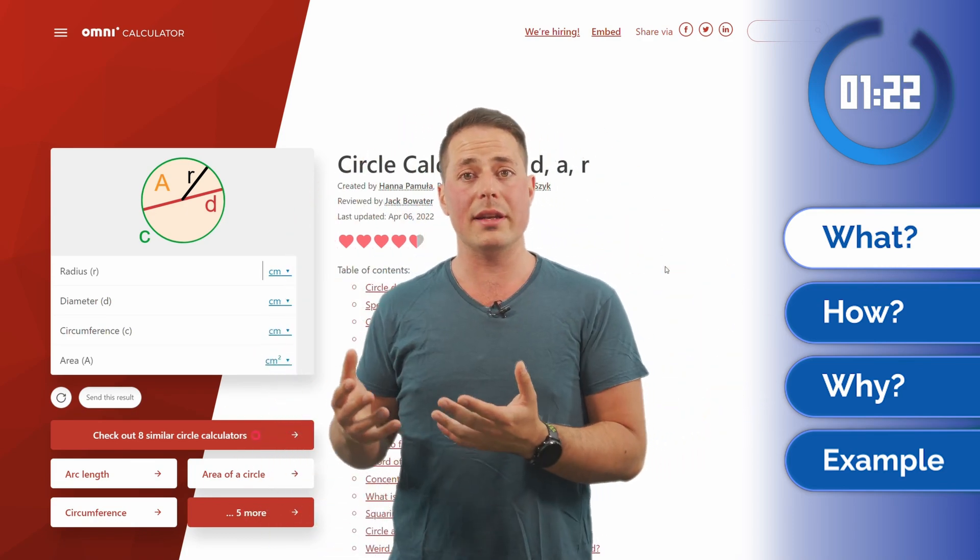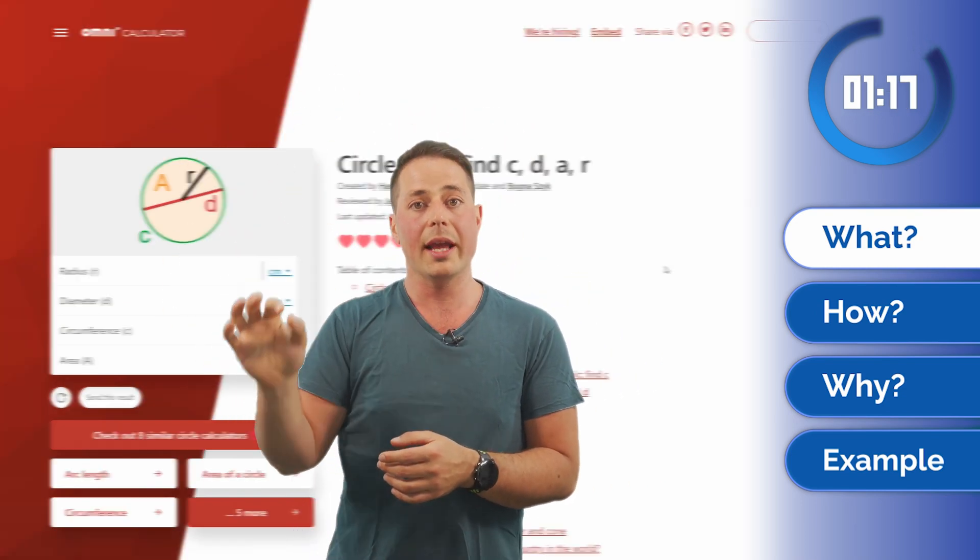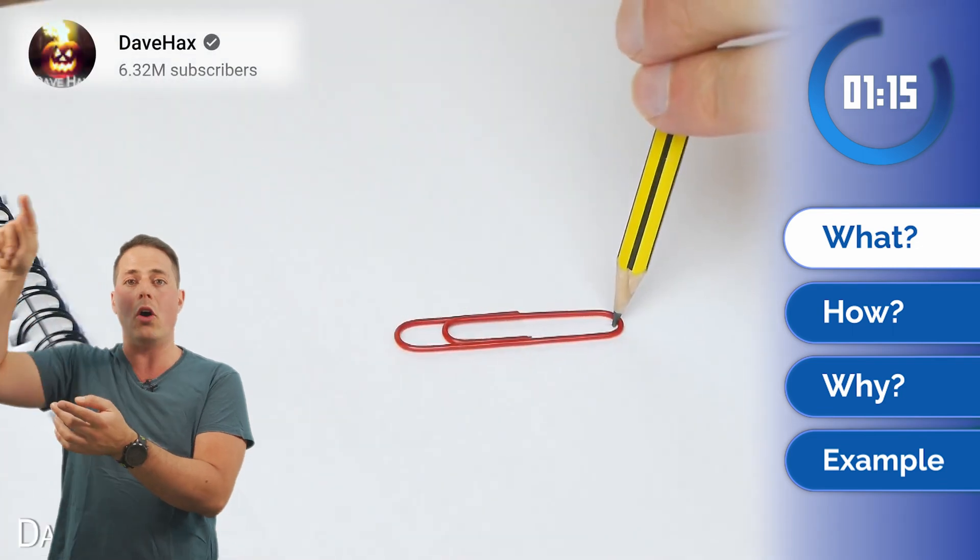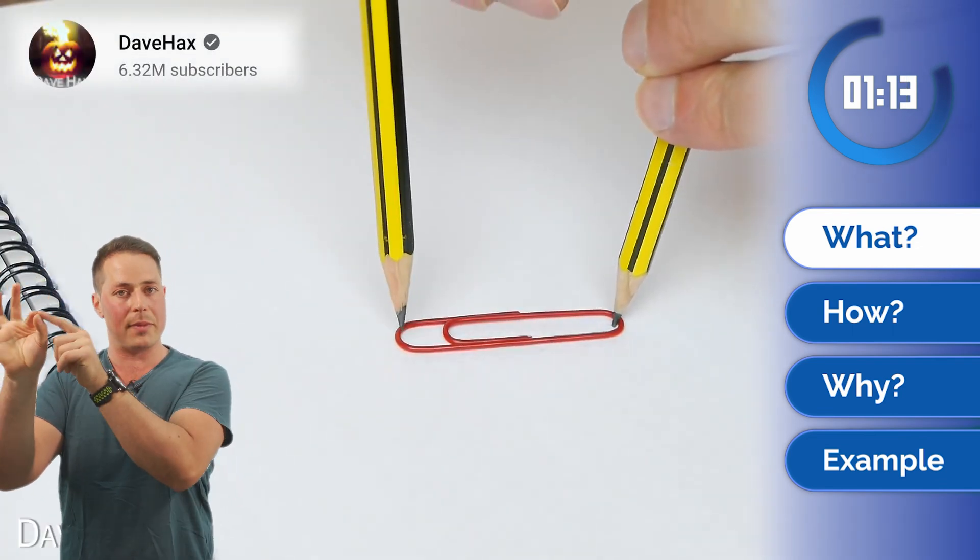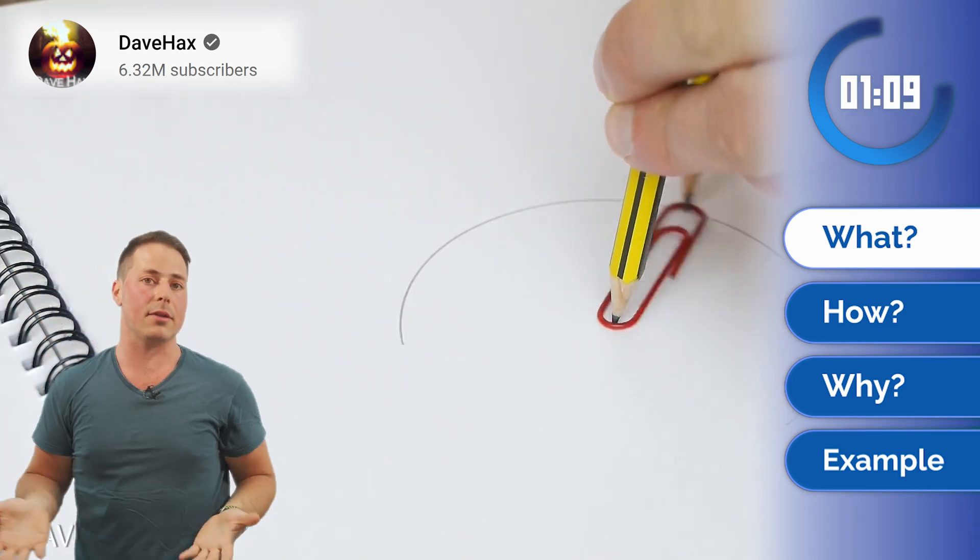A circumference is the collection of points that are equidistant to a center point, which is a center, and all the points that are at the same distance from that original one are the circumference. What's inside is the circle.